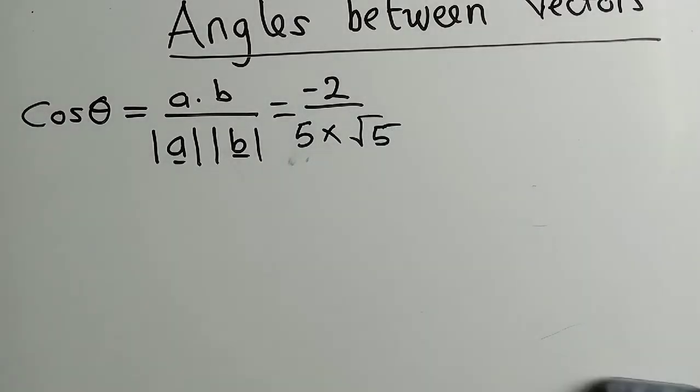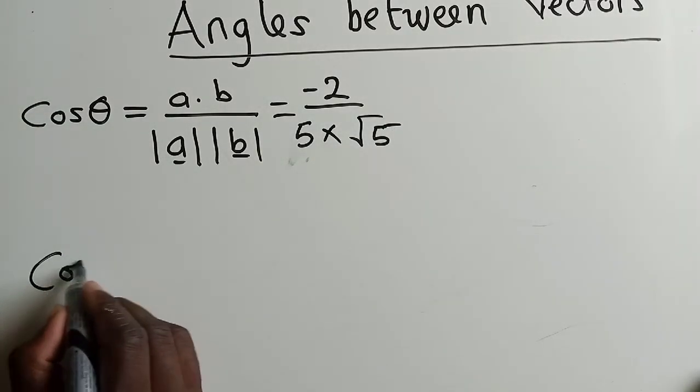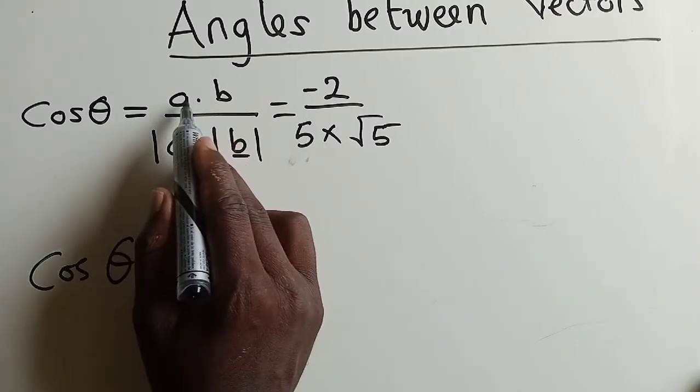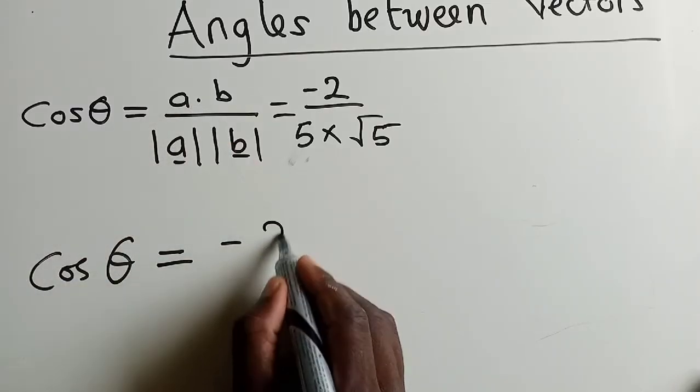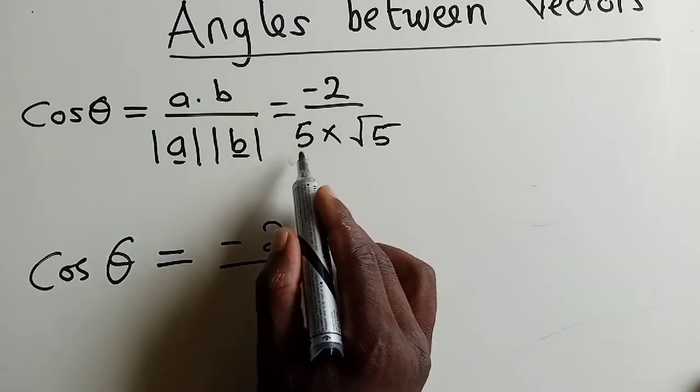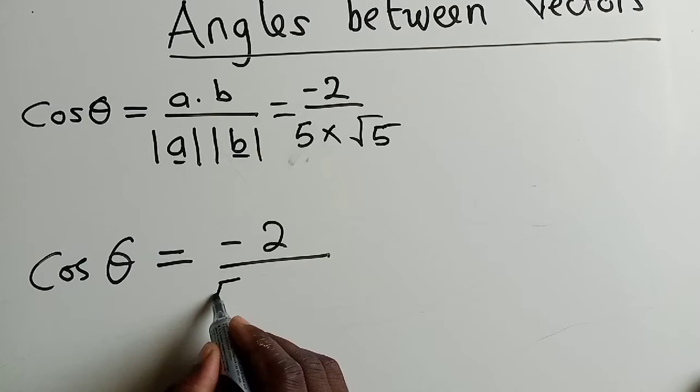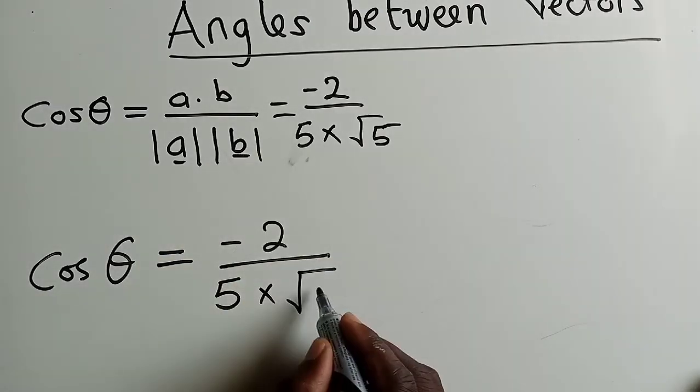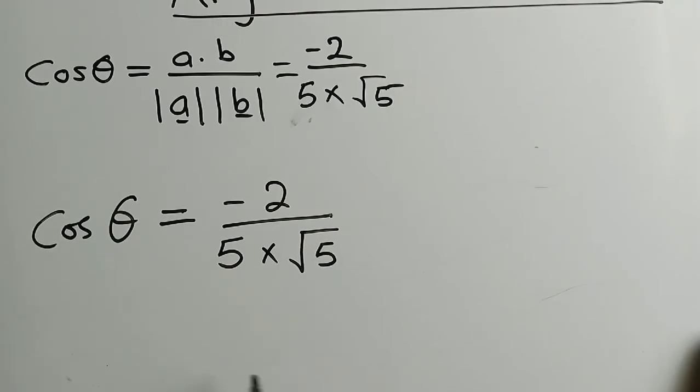Let me write it properly here. We know that the dot product is negative 2. We found negative 2. The magnitude of vector B is the square root of 5.